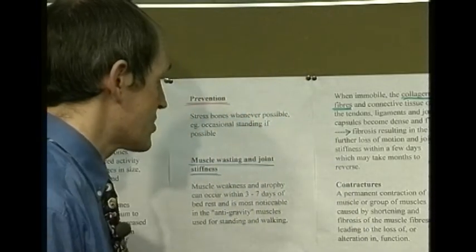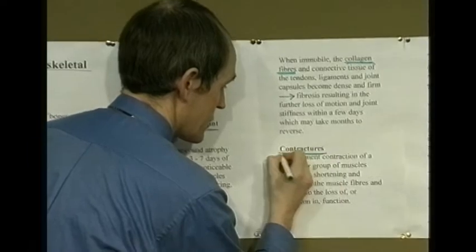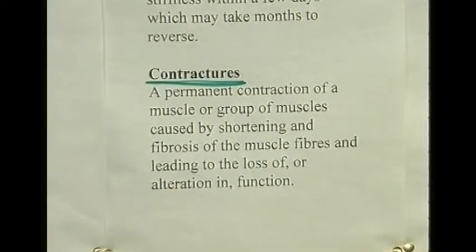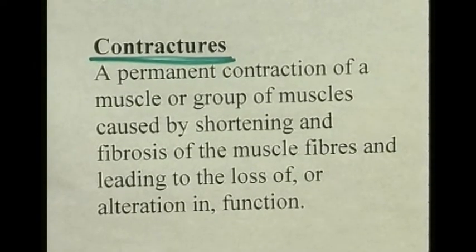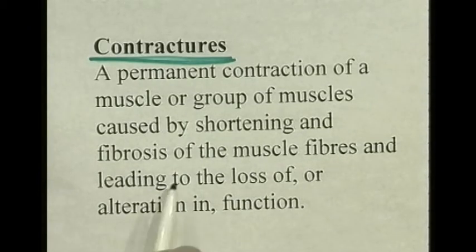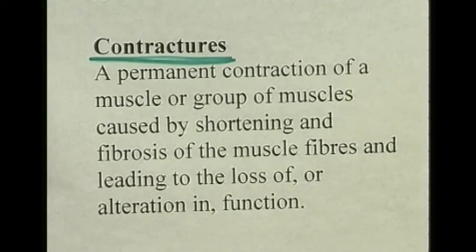Let's look at contractures — the end result of this process. A contracture is a permanent contraction of a muscle group, caused by shortening and fibrosis of the muscle fiber itself. This can lead to loss of muscle function, and the joint can actually seize up altogether — or at least show an alteration in function. So contractures represent permanent shortening of a muscle or group of muscles.